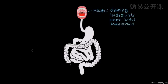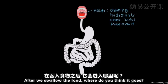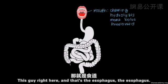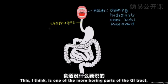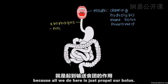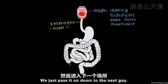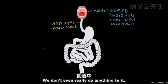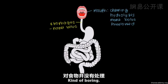After we swallow the food, it goes to the esophagus. This is one of the more boring parts of the GI tract, because all we do here is just propel our bolus — we just pass it on down to the next structure. We don't really do anything to it. Kind of boring.